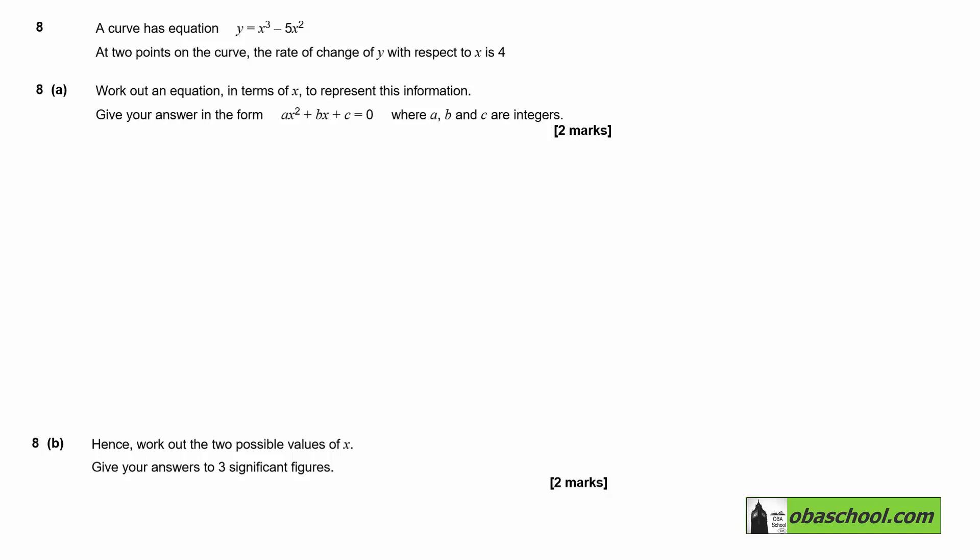A curve has equation y equals x cubed minus 5x squared. At two points on this curve, the rate of change of y with respect to x is 4. What that is saying is dy/dx, that's the rate of change of y with respect to x, is equal to 4.